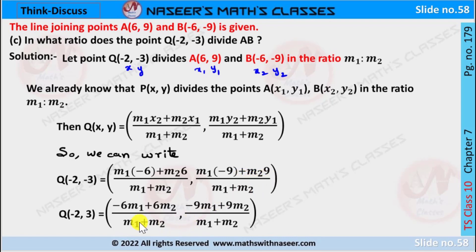Then we can write it as, after multiplying m₁ with -6, we get -6m₁ and m₂ into 6 written as 6m₂, and m₁ into -9 is written as -9m₁ plus m₂ into 9 is written as 9m₂.